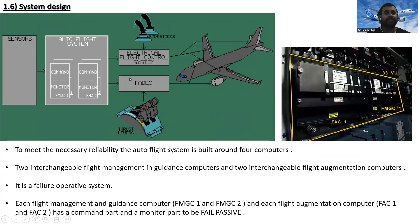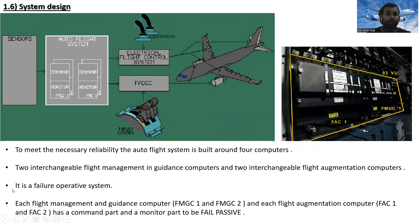To meet the necessary reliability, the auto flight system is built around four computers: two interchangeable flight management and guidance computers — FMGCs — and two interchangeable flight augmentation computers — FACs. Each of these computers has a command part and a monitor part to be fail-passive.